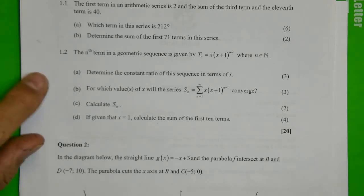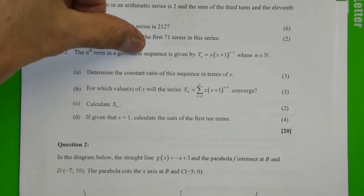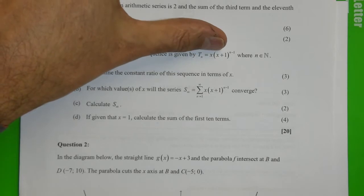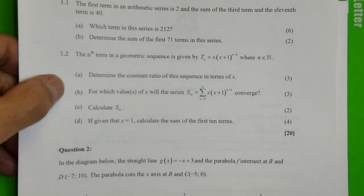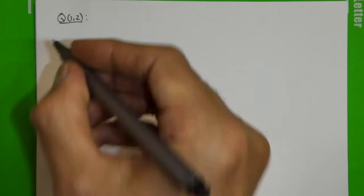Let's look at question 1.2 of the prelim. It says the nth term of a geometric sequence is given by Tn, and they give you the general term where n is a natural number. They ask us for the constant ratio of the sequence in terms of x. So let's write down what they gave us.